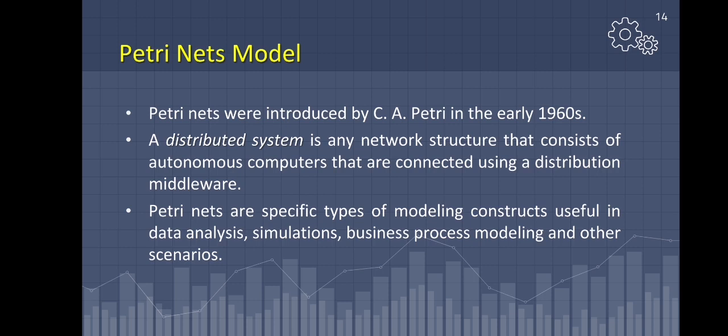A distributed system is any network structure made up of autonomous computers linked together by distribution middleware. Middleware is software that acts as a bridge between an operating system or database and application, especially on a network. Distributed systems enable the sharing of various resources and capabilities in order to provide users with a single integrated coherent network.